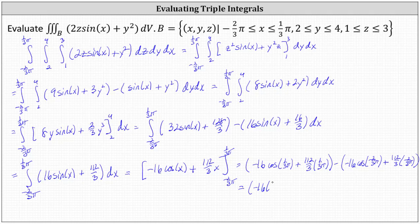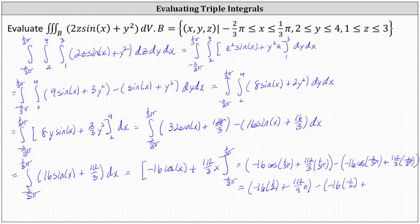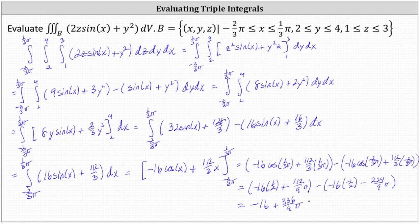This gives us negative 16 times one-half plus 112-ninths pi, minus negative 16 times negative one-half plus negative 224-ninths pi. Continuing to simplify, we have negative eight minus eight, which is negative 16, and then 112-ninths pi plus 224-ninths pi, which simplifies to 336-ninths pi, or 112-thirds pi. Therefore the exact value of the given triple integral is negative 16 plus 112-thirds pi.